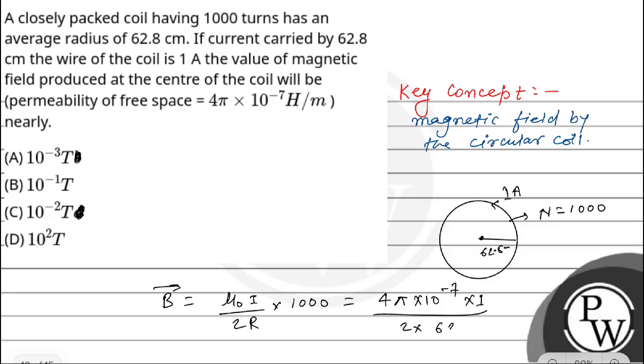For a circular coil, the magnetic field is μ₀ × I × N / 2R. So B equals μ₀ × I / 2R × 1000, which equals 4π × 10^-7 × 1 / 2 × 62.8 × 1000. Solving this, we get 10^-2 and then 2π / 62.8, so the value is 10^-3 tesla. Our final answer is option A. Hope you understood it well, all the best.